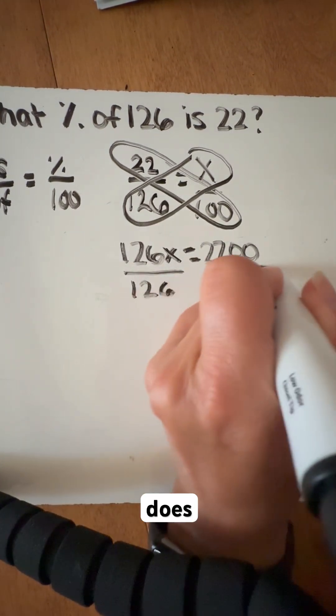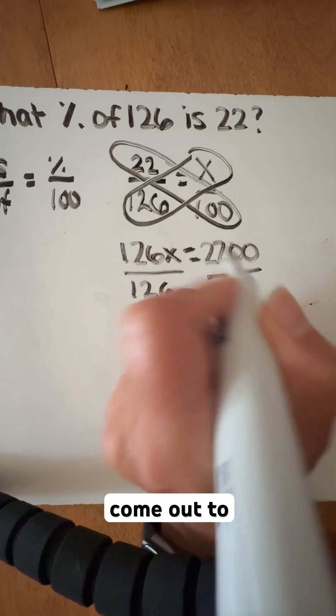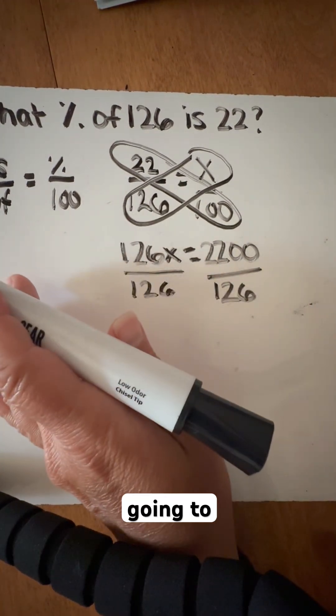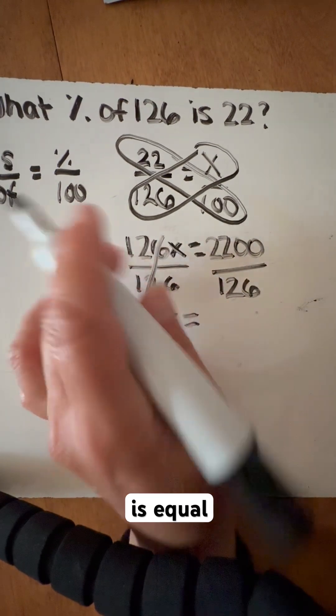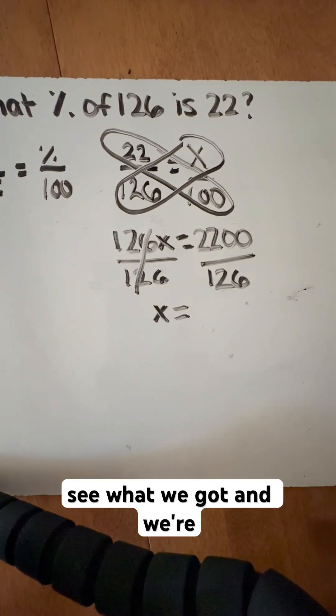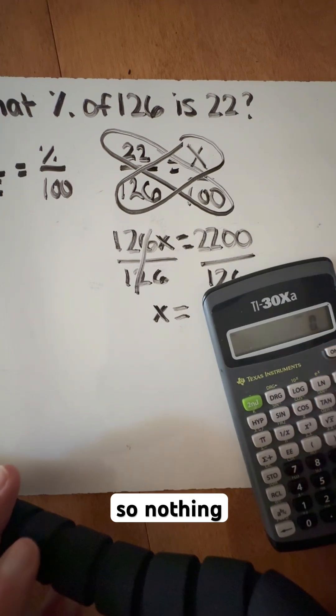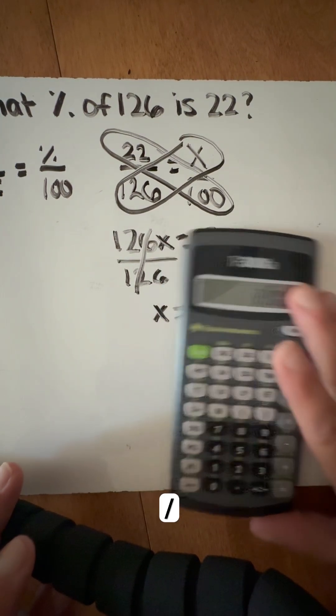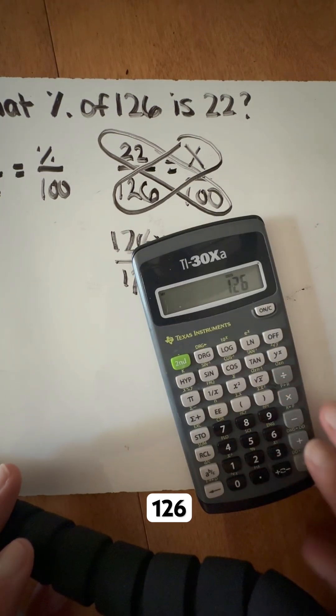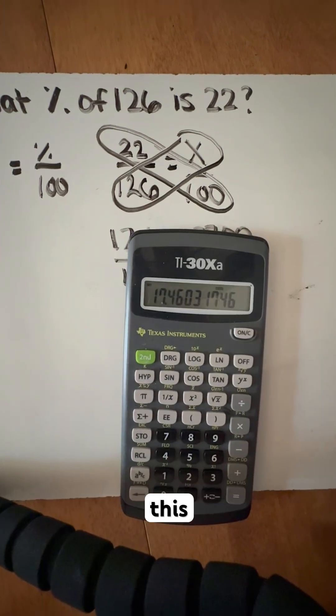And then the problem also does ask us that if it does come out to a decimal, that we are going to change it to the nearest tenth. So we're going to get x is equal to, let's see what we got. Now we're going to just use a simple calculator, so nothing crazy. So we're going to do 2200 divided by 126. And you can see we have this answer right here.